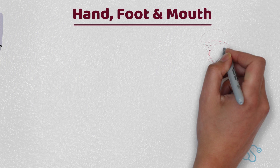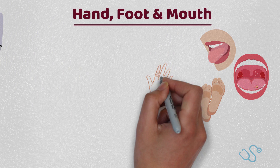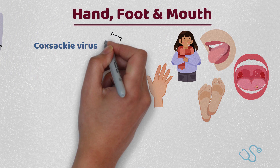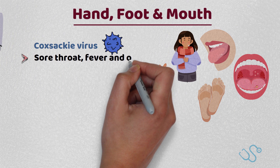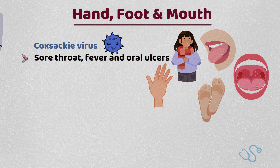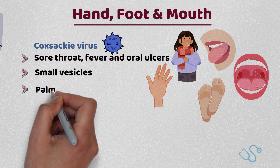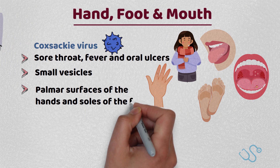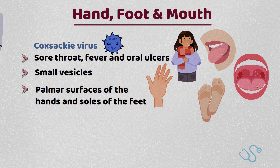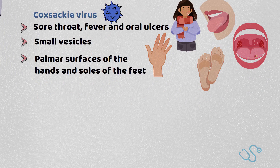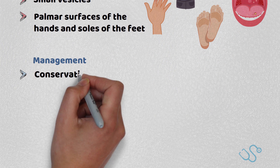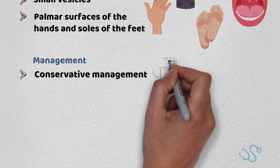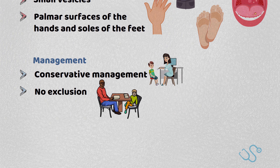Hand, foot and mouth syndrome is commonly caused by the Coxsackievirus. Patients often have a sore throat, fever and oral ulcers, with small vesicles subsequently appearing on the palmar surface of the hands and the soles of the feet. Outbreaks typically happen at nurseries, with management often self-limited with conservative advice. There is no school exclusion necessary.